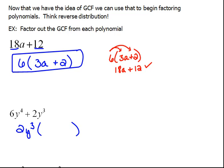Now we finish out our reverse distribution. 2y cubed times what would give us 6y to the 4th? Well, 2 times 3 would be 6, and y cubed times y would be y to the 4th. Now, 2y cubed times what would give us 2y cubed? Well, that would be a positive 1. You have to put the 1 in there. You have to.